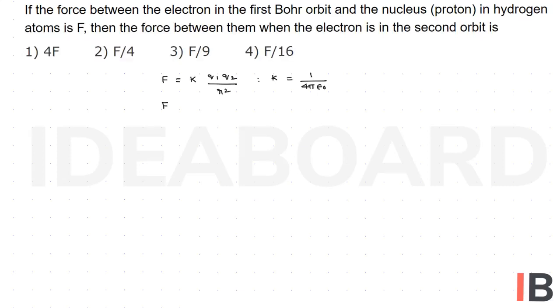Let us write F is inversely proportional to r square, because k being constant, q1 and q2 also become constant. Only the r value will be changed.